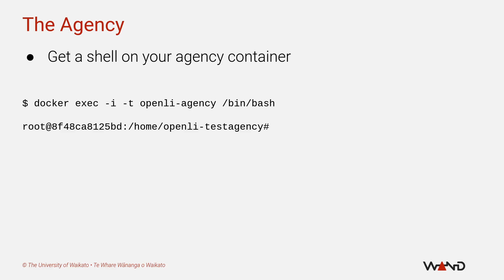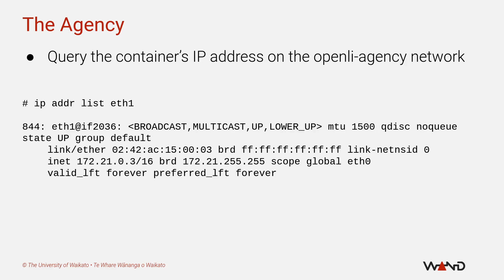Let me show you how we would use trace_packet_dump as a mock agency within our training lab environment. The first thing we need to do is get a shell on the agency container — this should be a very familiar process by now. Just make sure that you run your docker exec command against the openli-agency container. Our emulated LEA will be listening for handover connections from our mediator, so we need to know the IP address of the container so that trace_packet_dump can create a listening socket on the correct interface — specifically the address of the container at interface eth1.